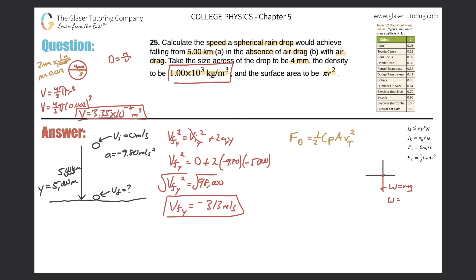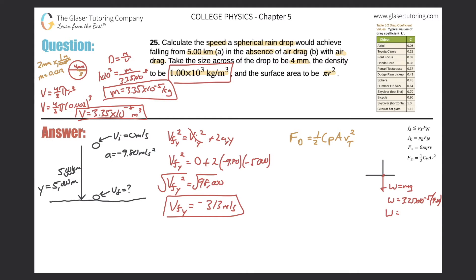The density of water is 1 × 10³ kg/m³. Using density = mass/volume: 1 × 10³ = mass / (3.35 × 10⁻⁸). Cross-multiplying gives mass = 3.35 × 10⁻⁵ kg. Multiplying by g = 9.80 m/s² gives the weight: W = 3.28 × 10⁻⁴ N.